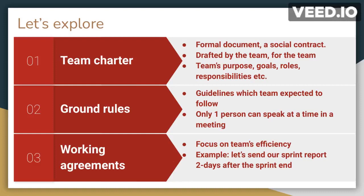Ground rules are simple guidelines which the team is expected to follow. For example, there could be a ground rule in which the team agrees that only one person can speak at a time during a meeting. This meeting could be a daily standup, sprint planning, sprint retrospective, or any other technical meeting. During project execution, these ground rules are expected to be followed by the team members.